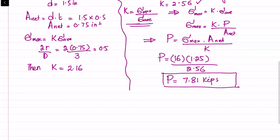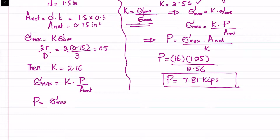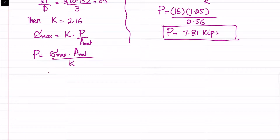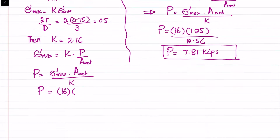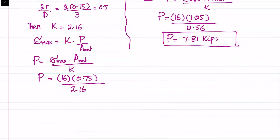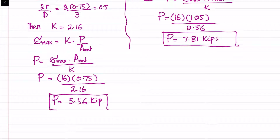Using sigma_max equals K times P divided by A_net for hole B, we get P equals sigma_max times A_net divided by K. Substituting: 16 times 0.75 divided by 2.16, which gives P equal to 5.56 kips for hole B.